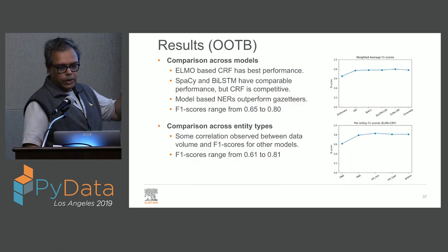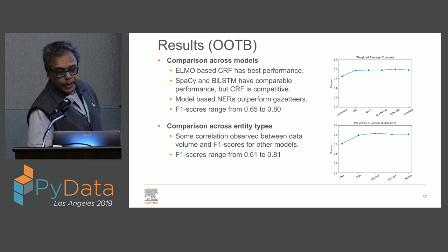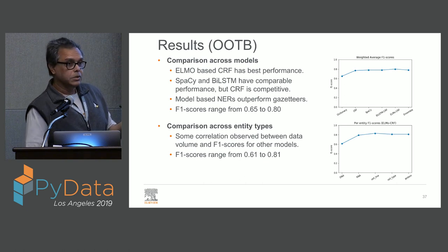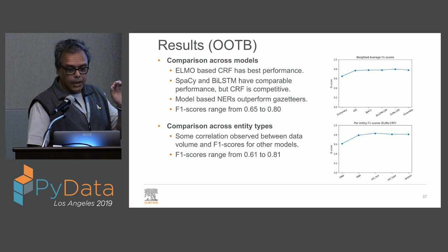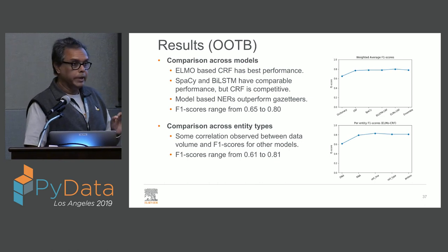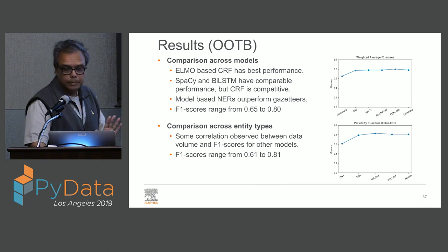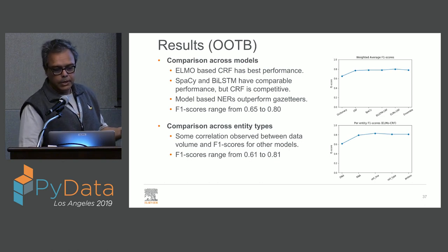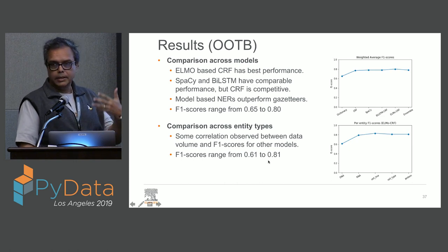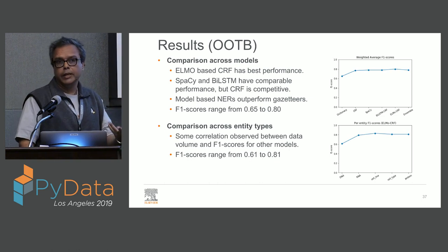Here's a comparison across the different models. I'm getting F1 scores from 0.65 to 0.80 with essentially three lines of code per model and no hyperparameter tuning. These are pretty good baselines to start with. Even across entity types — from the ELMo model — F1 scores range from 0.61 to 0.81. The idea is that you can leverage existing functionality and create your custom NERs really, really fast.